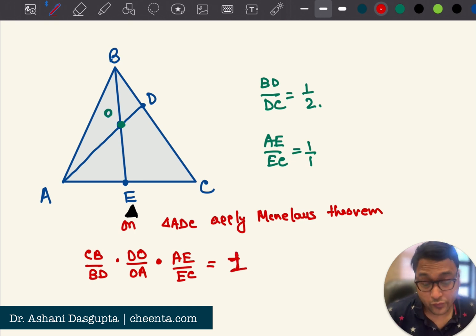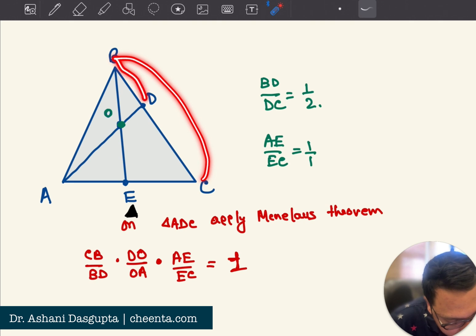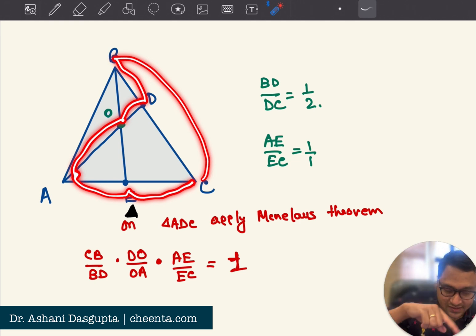just, we are just interested in the lengths, so we don't use the signed sides. So the way I remember it is CB is to BD, DO is to OA, AE is to EC. So the one rotation is complete in some sense.